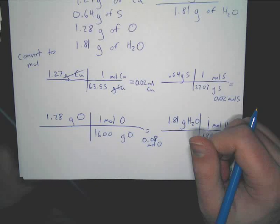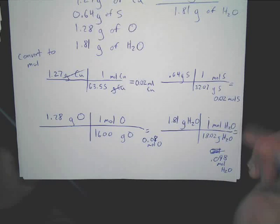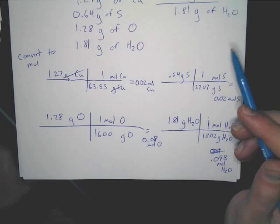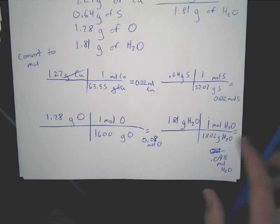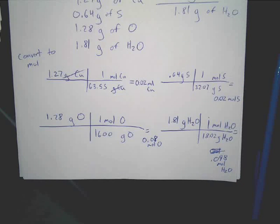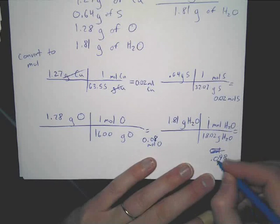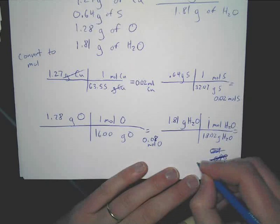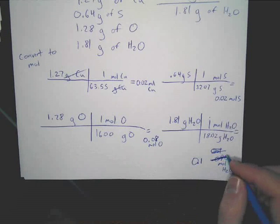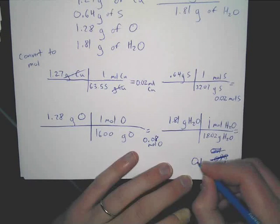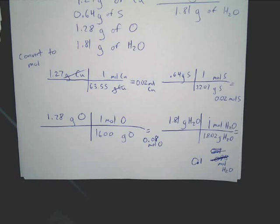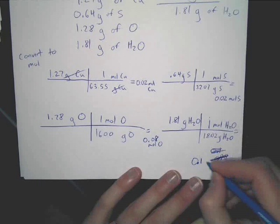Is the water value 0.100 or 0.098? It comes out to 0.100 — one student forgot to include 0.02 in the calculation, which caused the discrepancy.